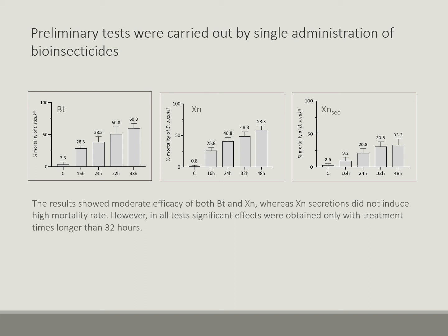The bio-insecticides, Bacillus thuringiensis and Xenorhabdus, when tested individually on L1 and L2 instars of Drosophila larvae, lead to a moderate mortality rate at treatment times longer than 32 hours, while Xenorhabdus secretions showed a lower effect even at long times after administration.